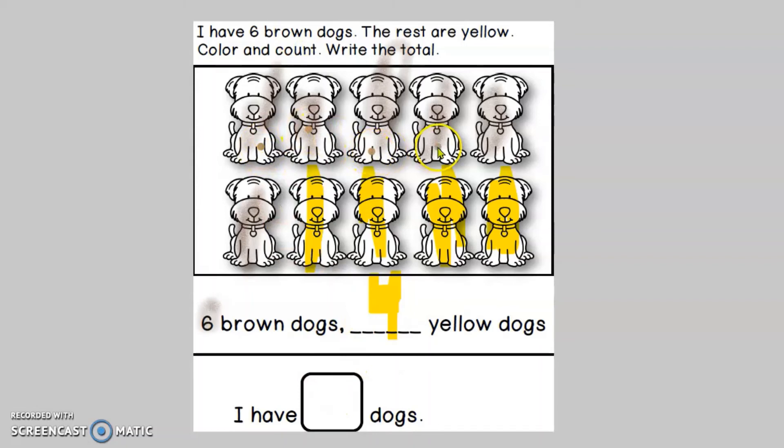Four yellow dogs. In total that means that we have one, two, three, four, five, six, seven, eight, nine, ten. Ten dogs. Some are brown and some are yellow.